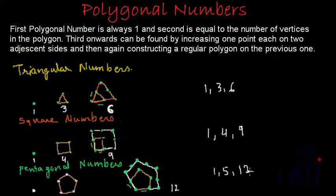Following the same method, you can find hexagonal numbers, heptagonal numbers, or octagonal numbers. Any polygonal number can be found by using this method. So this was the basics about polygonal numbers.